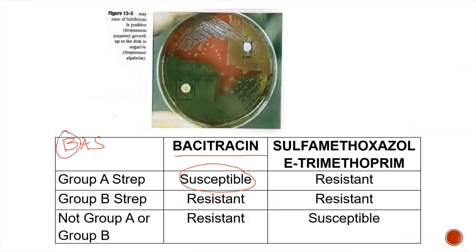The mnemonic is BAS — Bacitracin, Group A, Susceptible. Group B is resistant to both; think of the 'B' in Group B as resistant to Both. If you have an organism resistant to bacitracin but susceptible to SXT, that is neither Group A nor Group B. SXT stands for sulfamethoxazole-trimethoprim.